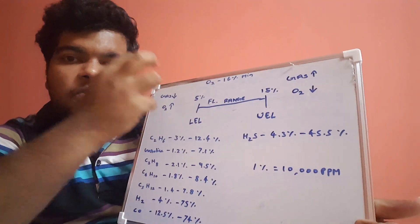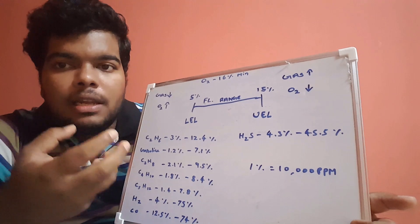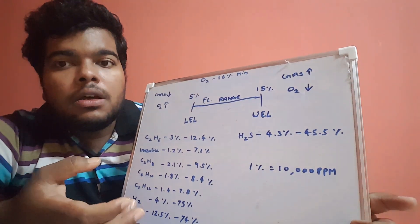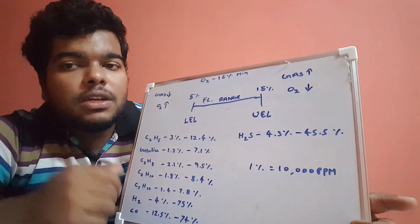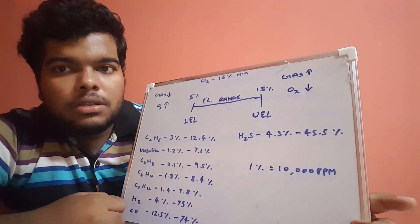We know that 1 percentage is equal to 10,000 ppm. So if 5 percentage of LEL is available in air, then it has the capacity to ignite when there is sufficient oxygen in place and in the presence of a heat source as well.